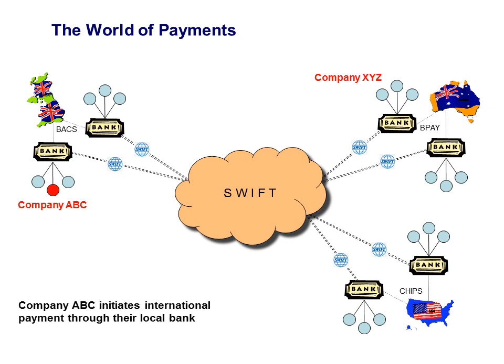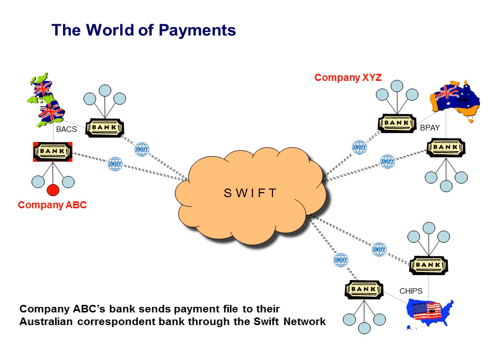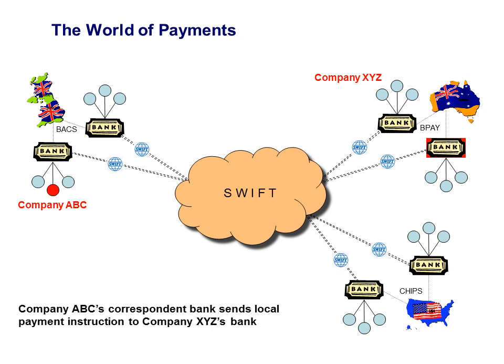Here are two companies, and company ABC initiates the transfer to Lloyd's Bank. Lloyd's subsequently sends the message to SWIFT, where Lloyd's has a correspondent banking relationship with another bank — let's say it's ANZ in Australia. The destination for the beneficiary for this payment is company XYZ, who banks at another bank, perhaps Westpac, in Australia.